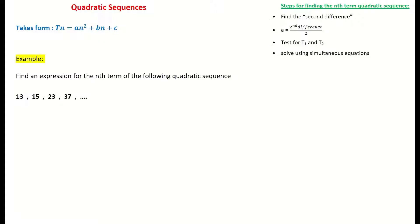b, and c stand for some random unknown numbers. And those unknown numbers, a, b, and c are what you have to find. In this example here, we're saying to find an expression for the nth term of the following quadratic sequence: 13, 15, 23, 37, and so on.